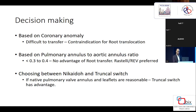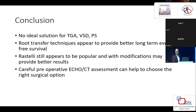Based on coronary anatomy, unfavorable patterns — such as a coronary running anteriorly or between the great arteries — place the child at higher risk and favor Rastelli or REV. The pulmonary-to-aortic annulus ratio is key: a very small ratio offers no advantage with a major root transfer operation, and Rastelli or REV may suffice. However, if the ratio is significantly larger — approaching 0.5, 0.6, or closer to 1.0 — root transfer clearly has an advantage. Between Nikaido and Truncal Switch, if the native pulmonary annulus is large with reasonable leaflets, Truncal Switch is a better option.